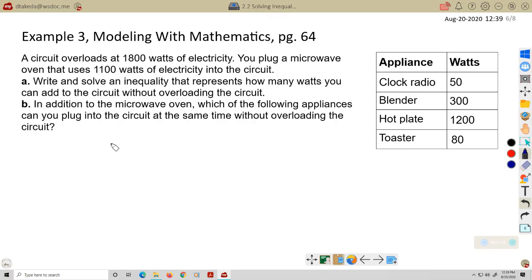And they're saying that this microwave oven uses 1,100 watts, but it overloads at 1,800 watts. So what does that mean? That means whatever our total of appliances are, their total watts has to be less than 1,800. It can't be equal to 1,800 because then it would overload. So it has to be less than 1,800. Okay, so the appliance watts, we know one of them is going to be 1,100. That's our microwave. And we're going to add to that some unknown amount of watts. And that has to be less than 1,800. Okay, so this satisfies the first part of A. We've written an inequality that represents how many watts we can add to the circuit without overloading it. So let's go ahead and solve it here.